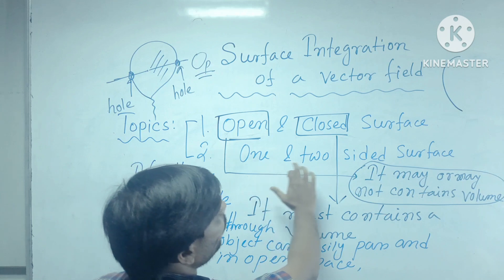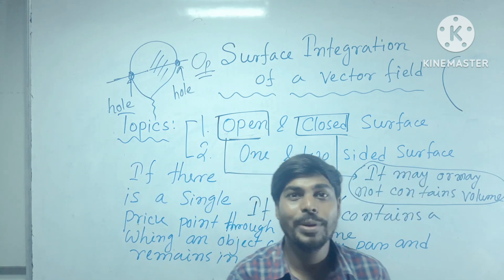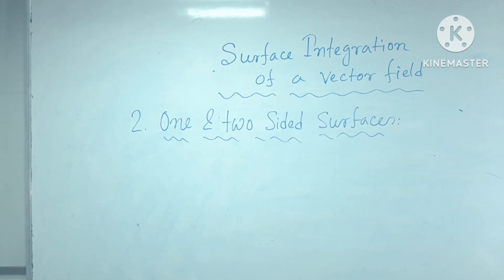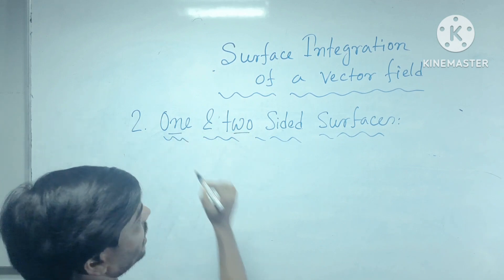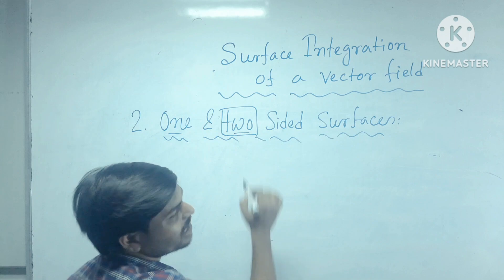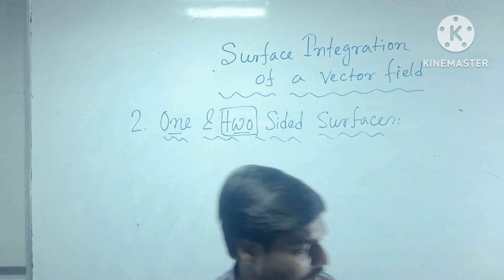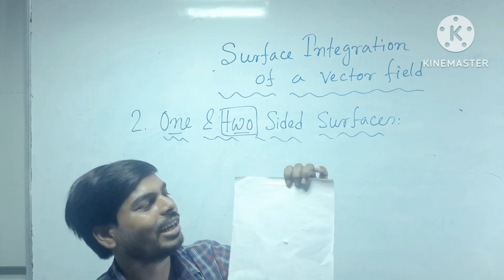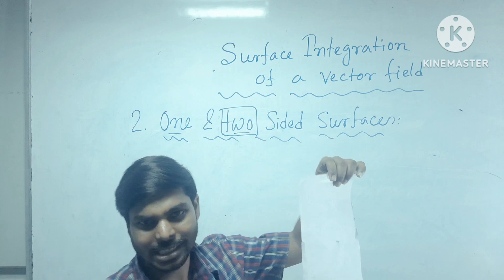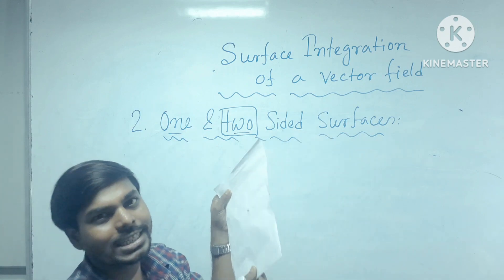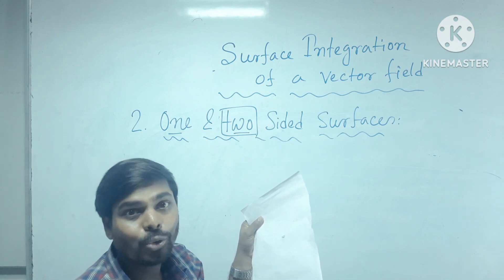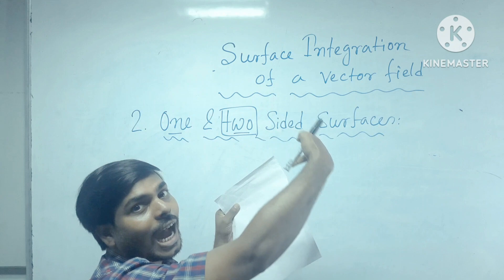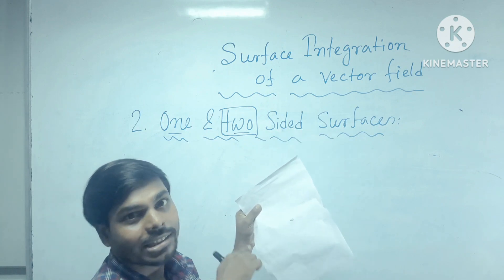Now we would like to discuss about the one-sided and the two-sided surface, with the very famous example of a Mobius strip. What are two-sided surfaces? It is easy to identify. For example, consider a plain sheet of paper — it contains two surfaces, one is the front surface and another is the back surface. How do you know mathematically or scientifically that this has two surfaces? If you walk along one surface, you cannot reach the other surface without taking a crossover through the edges.